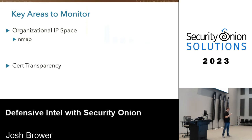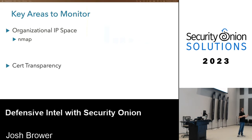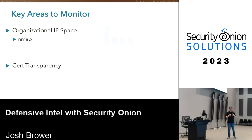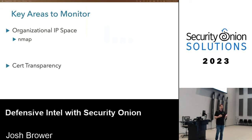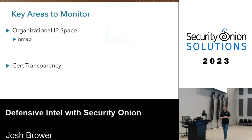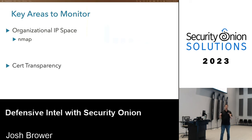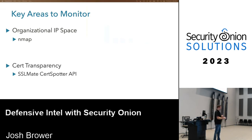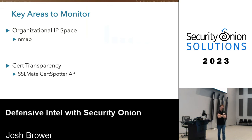Second is certificate transparency. A few years ago, mainstream certificate authorities started publishing logs of all certificates they issue — the CT log — and it's freely available. You can query it for subdomains for a particular domain, get an idea of shadow IT happening in your organization, and detect if someone picks up an abandoned subdomain. I query that using SSL Mate's cert spotter API, which is open source, and free for limited use.